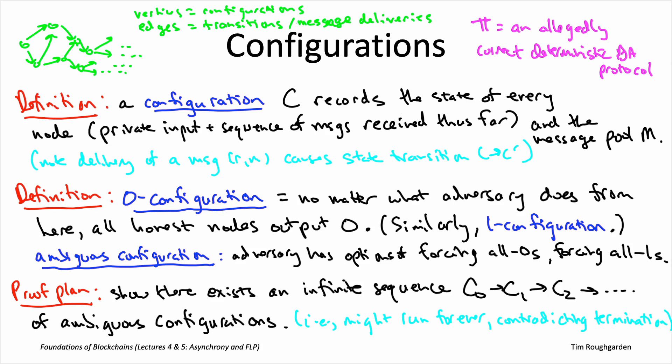So the way we're going to prove that there exists this infinite sequence is we're going to have a lemma one and a lemma two. Remember a lemma is to a theorem like what a subroutine is to a program - they're helper statements to get us to our eventual goal of proving the FLP impossibility result. And this lemma one and lemma two are going to act kind of analogous to a base case and an inductive step in a proof by induction. So lemma one is going to get us started. We'll use lemma one to show that there exists an initial choice for the sequence. We can choose a configuration C naught that is ambiguous with respect to the given protocol π.